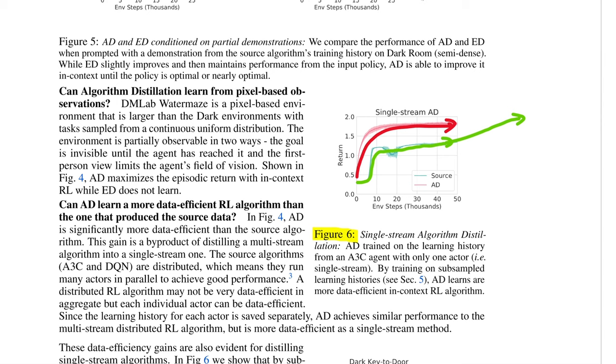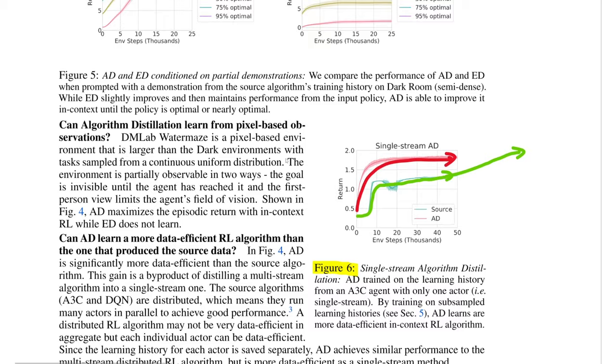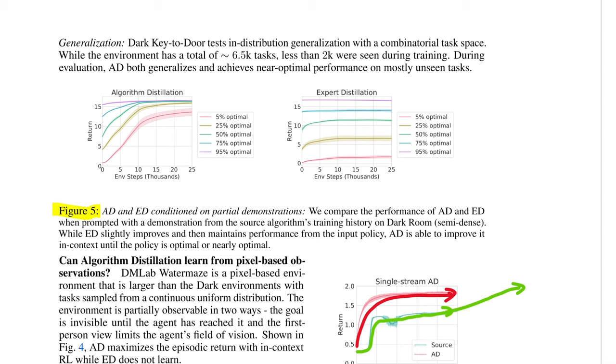Now that I got that off my chest, let's get back into some more of these results going into Figure 5 here. In Figure 5, the authors look at whether AD can be prompted. Essentially, the idea is that if we prompt AD with some rollouts that are already 25% or 50% optimal, can it use that as a starting point to keep improving? And the answer is yes. As you can see, all of these prompts allow it to keep improving to around its near peak performance level. This is expected given what we've seen so far, but I think these results are here more so just to say, hey, this is also another thing you can do with this.